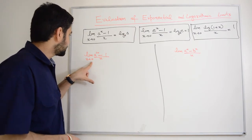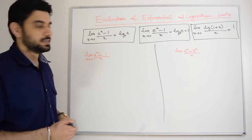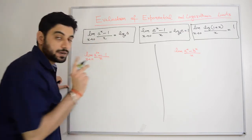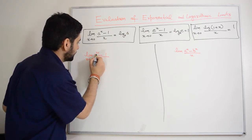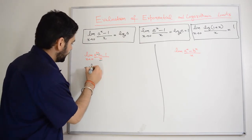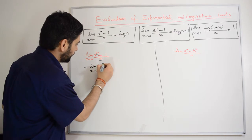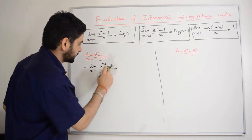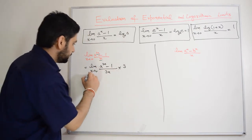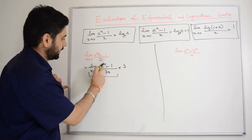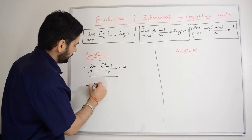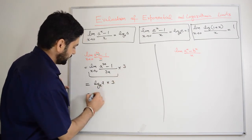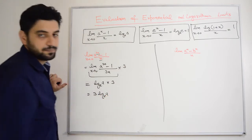Let's see this example: limit x tending to 0, a raised to power 3x minus 1, divided by x. You can compare this with the standard form, but here you have a raised to power 3x. So whatever is in the exponent must also be in the denominator. To make it the standard form, write a raised to power 3x minus 1, divided by 3x, and multiply by 3. This gives log of a to the base e into 3, so the answer is 3 log_e(a).